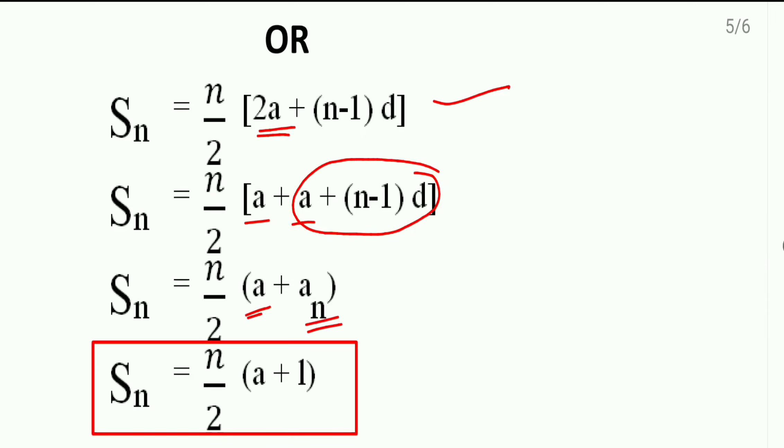nth term, it means what? The last term. So, in the formula I wrote sum of n terms which is equal to n by 2 in the bracket (a + l).